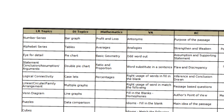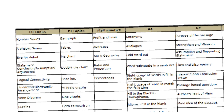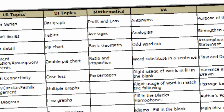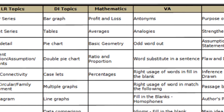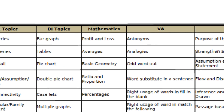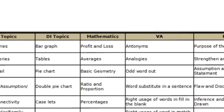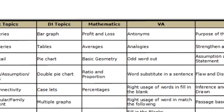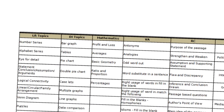For quant, the syllabus is quite limited: profit and loss, averages, geometry, ratio, proportion, and percentages. There will be 5 questions on arithmetic — covering profit and loss, averages, ratio, proportion, and percentages — and 2 questions on geometry, so a total of 7 questions.